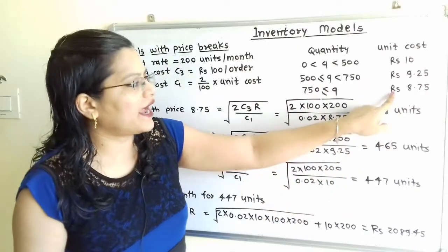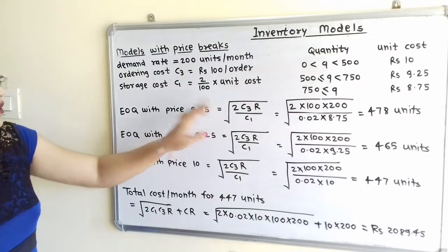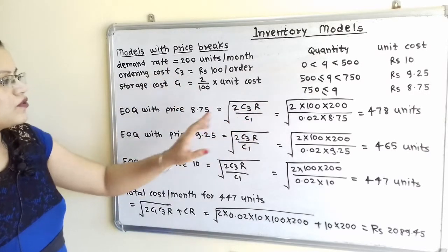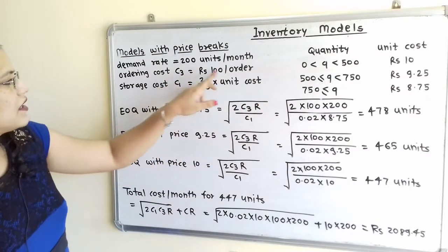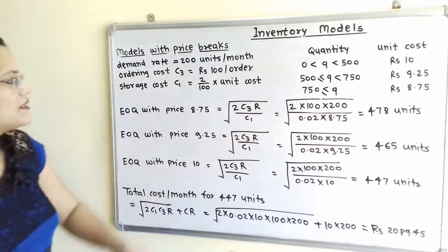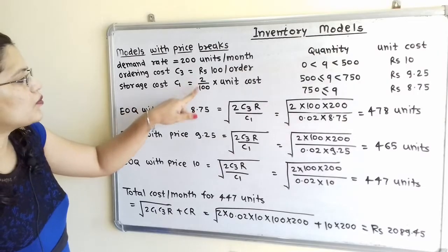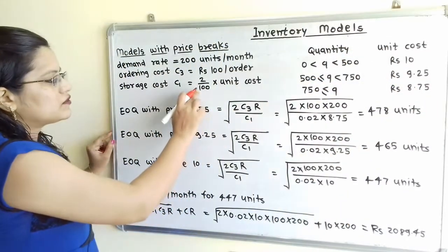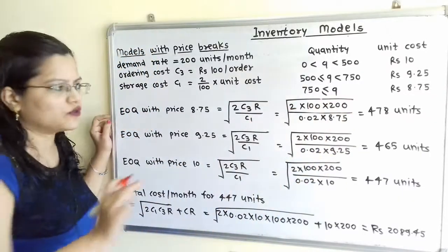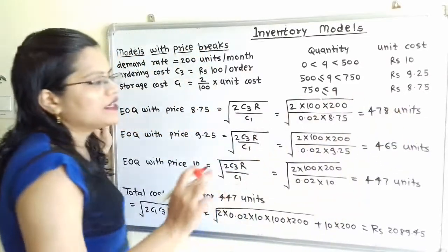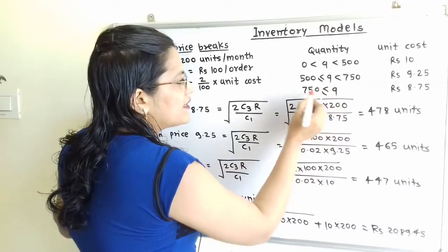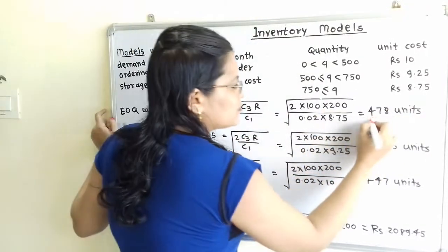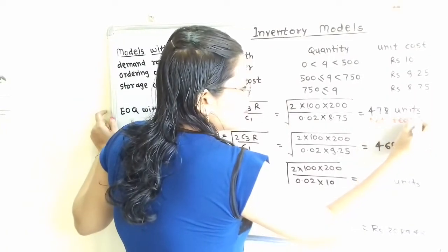EOQ at Rs.8.75: using the formula √(2C3R / C1), where C3 = 100, R = 200, and C1 = 0.02 × 8.75. Taking the square root gives 478 units. However, this price is applicable only when quantity is 750 or more, and 478 < 750, so this is not feasible.